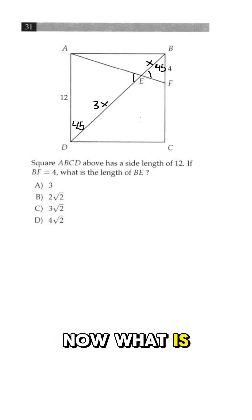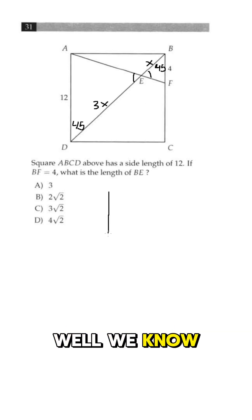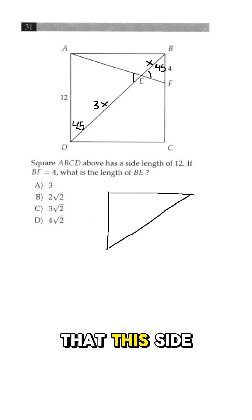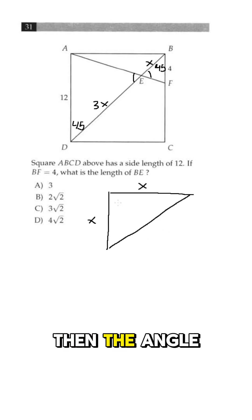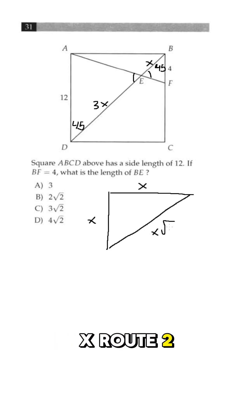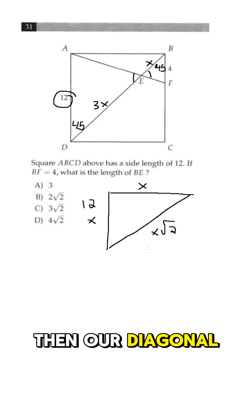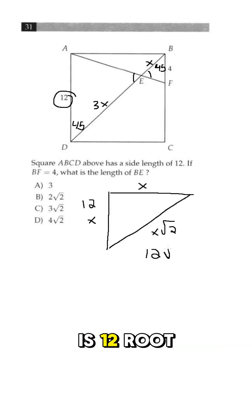What is the length of that whole diagonal though? We know that if we have a 45-45-90 triangle and both legs are x, then the hypotenuse across from the right angle is x√2. So if our side is 12, then our diagonal is 12√2.